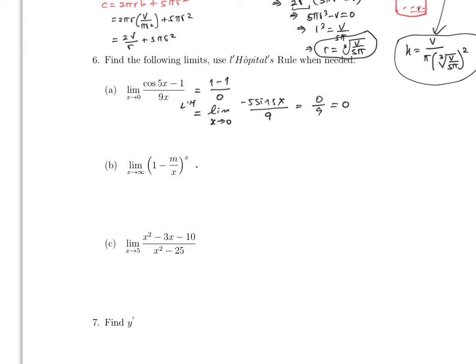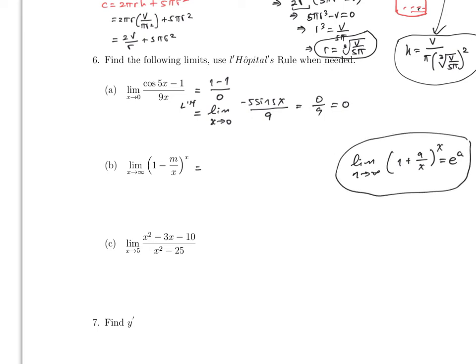We talked about this one before — you don't have to do this from scratch. Remember, this is one of the limits you need to memorize. The limit of (1 + a/n)^n as n goes to infinity, where a is a constant, equals e to the a. That is one of the most famous limits. So the answer here is e to the minus m.